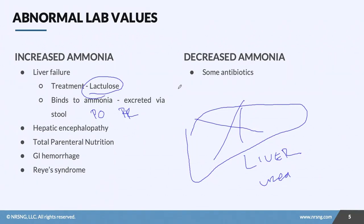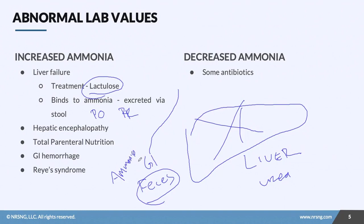Here's how lactulose works: the ammonia travels to the GI system, where it binds to the feces and then leaves the body that way. So the protein comes in, turns into ammonia, is supposed to go to the liver and transfer out via urea through the kidneys — but because the liver can't do that, we give lactulose, which causes the ammonia to bind to the feces and leave the body via the stool.